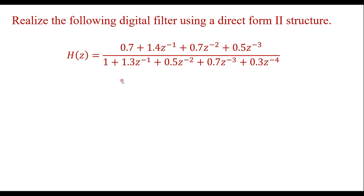In this video, I will design a direct form 2 structure for a given digital filter. The problem is to realize the following digital filter using a direct form 2 structure. The transfer function H is given, and it consists of a numerator as well as a denominator — that is, it contains poles as well as zeros. Since it contains both poles and zeros, it belongs to an IIR filter.